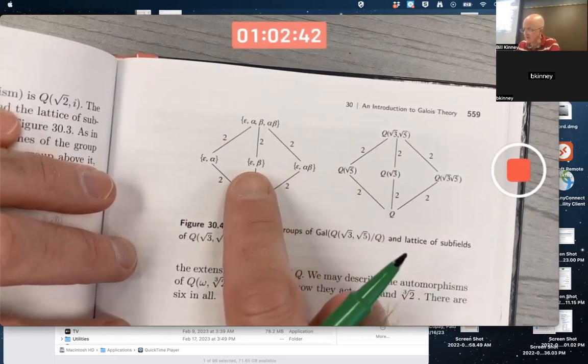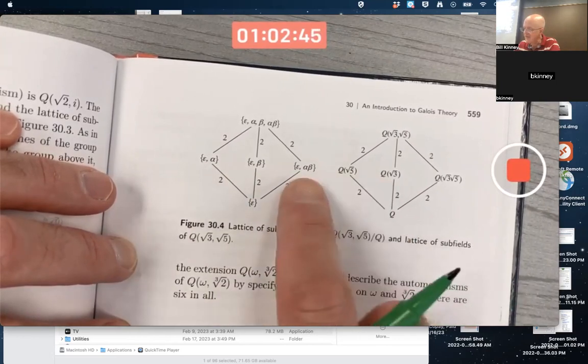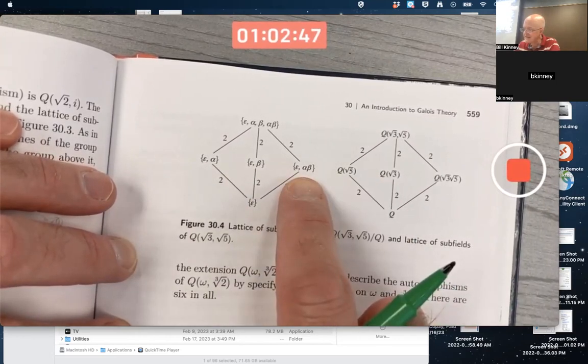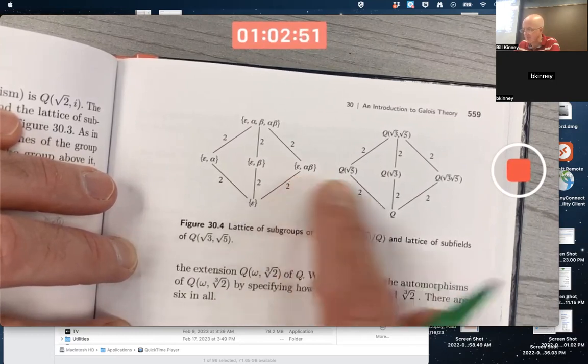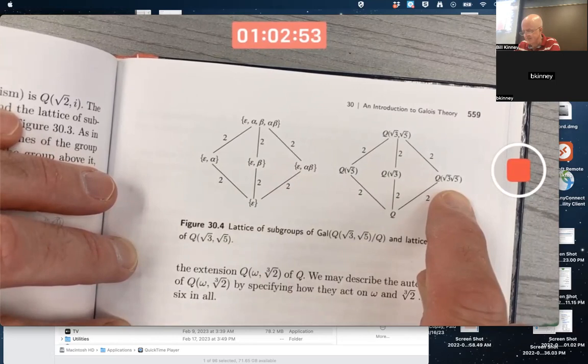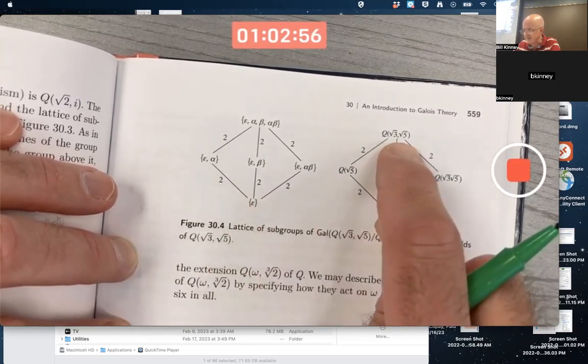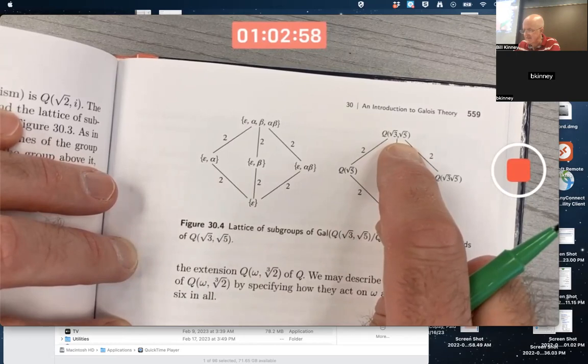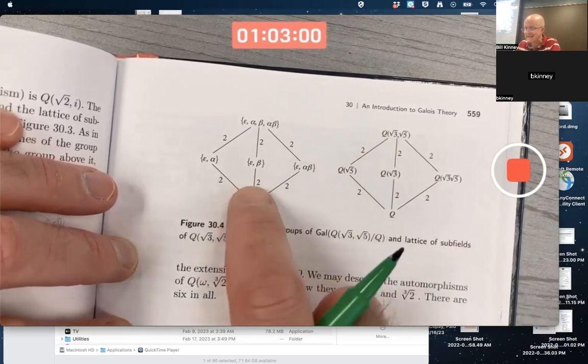Beta fixes square root of 3. The fixed field of that is that. Alpha composed beta, it turns out, fixes not square root of 3 and square root of 5 individually, but their product. And the fixed field of epsilon is the entire field extension. And these are degree 2, just like these are indices 2.